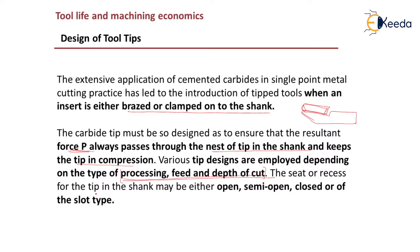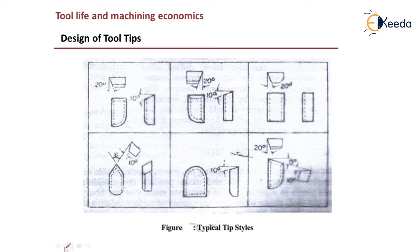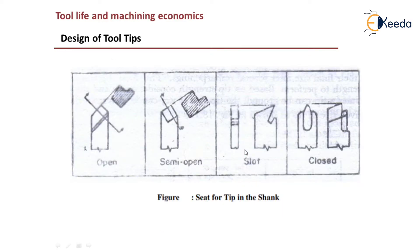The seat or recess for the tip in the shank may be either open, semi-open, closed, or of slot type. Here you can see different tip styles. Some are having an angle of 20 degrees, others 10 degrees, and various other shapes. You can have open, semi-open, slot, or closed type tool tips.